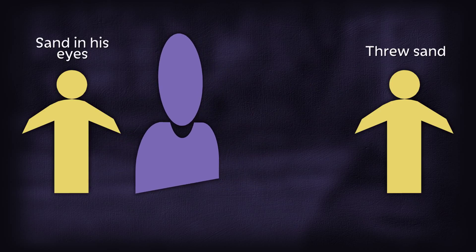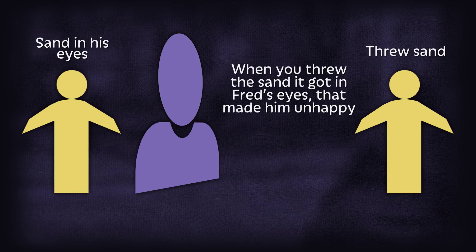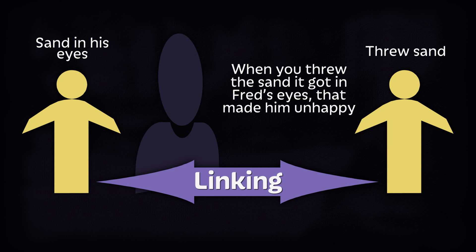You also say to the other child, 'You were excited with the sand. When you threw it up in the air, it got into Fred's eyes. That really hurt him, or that made him unhappy.' That's where you're now linking the child who carried out the action to the child who's experiencing the result.